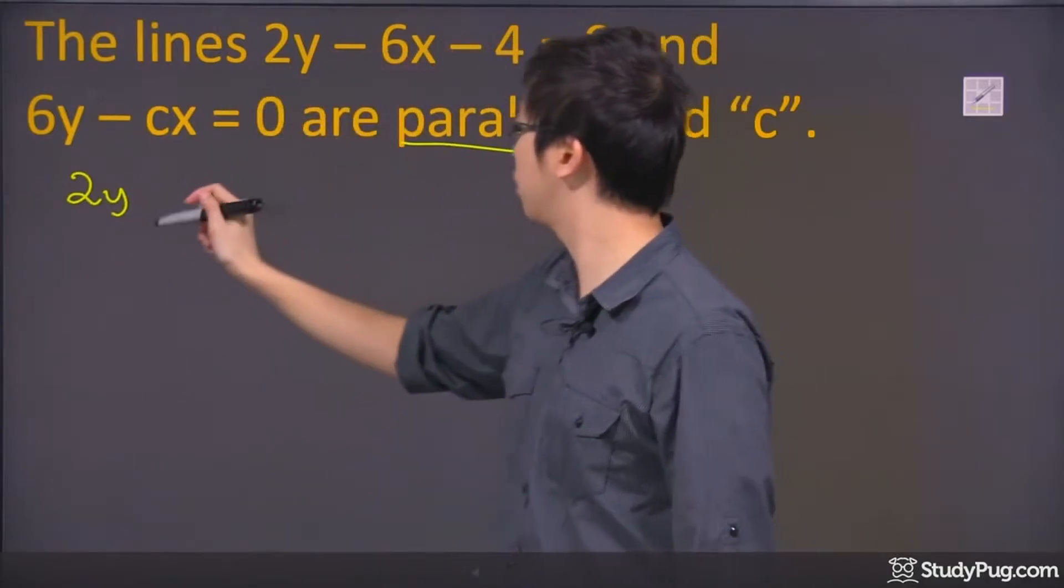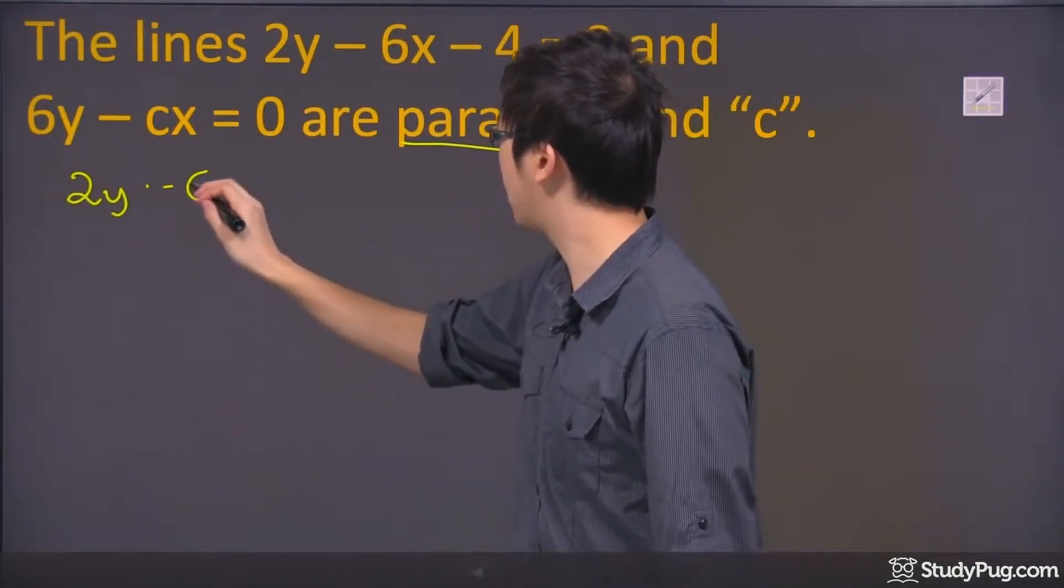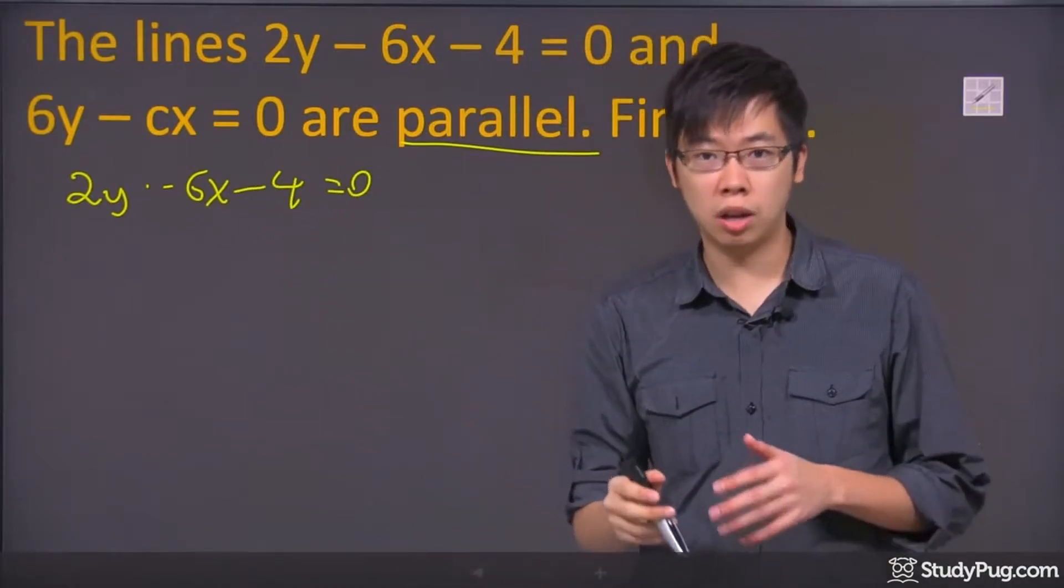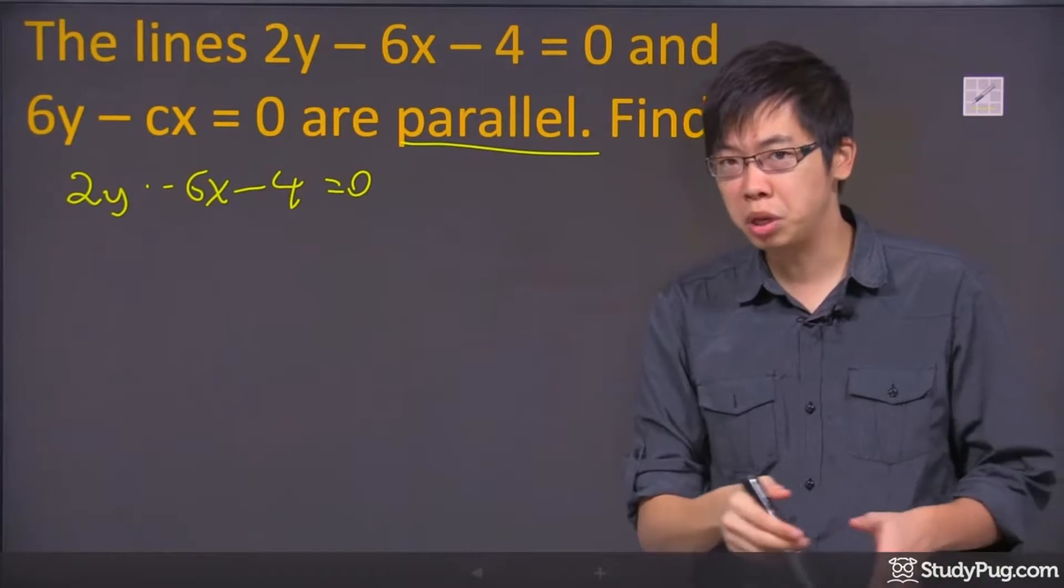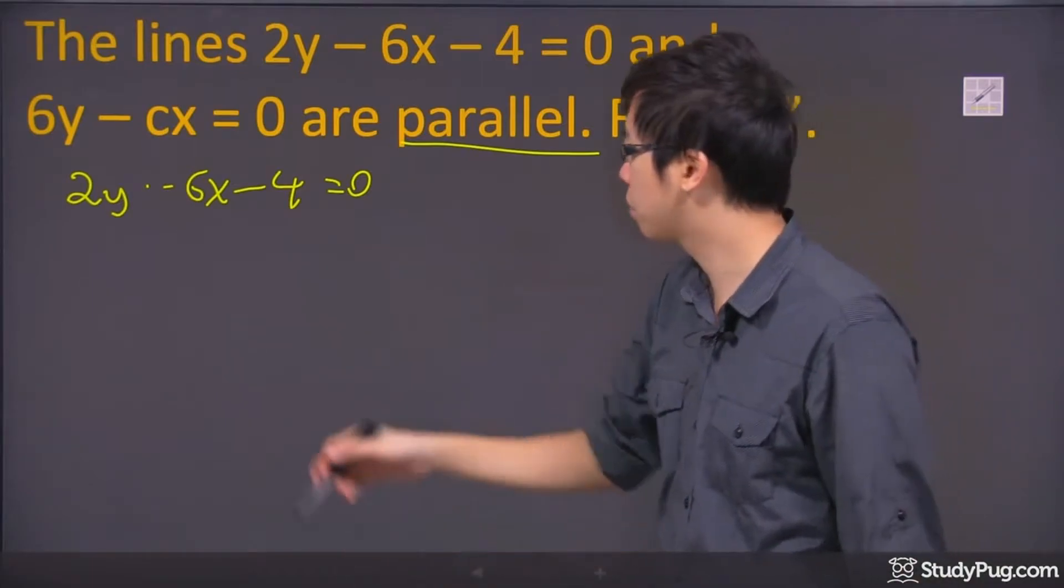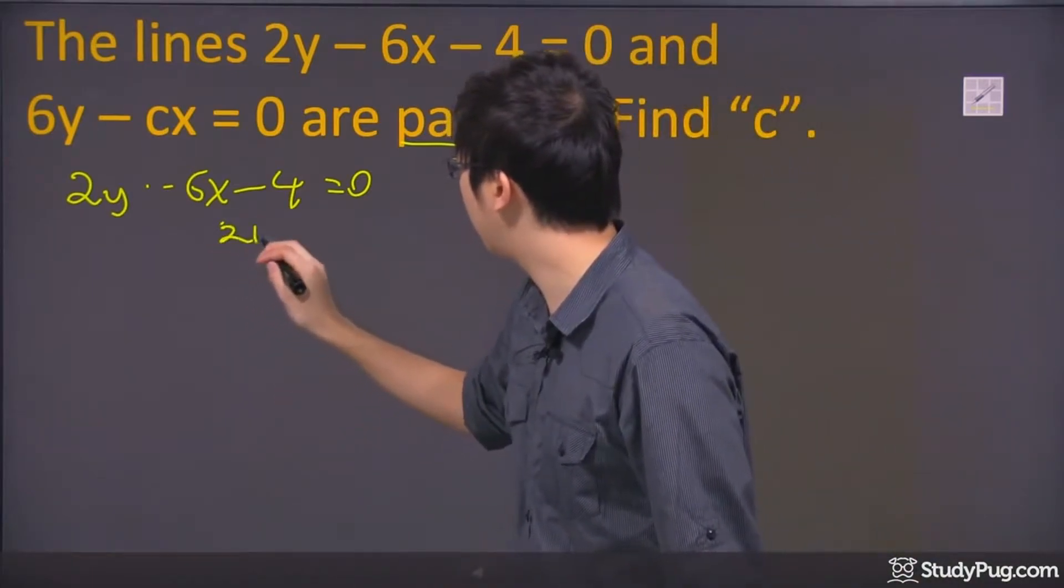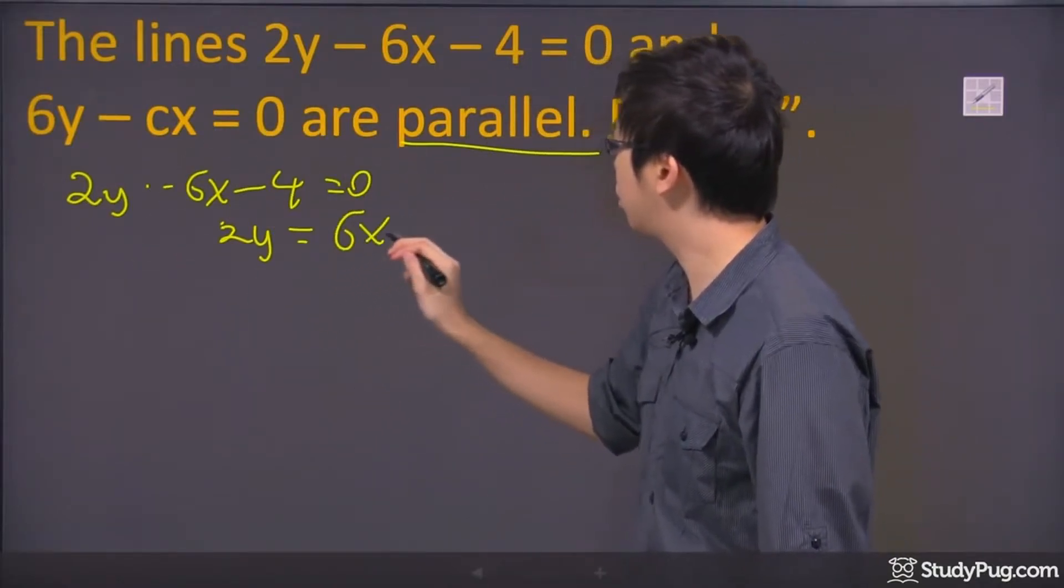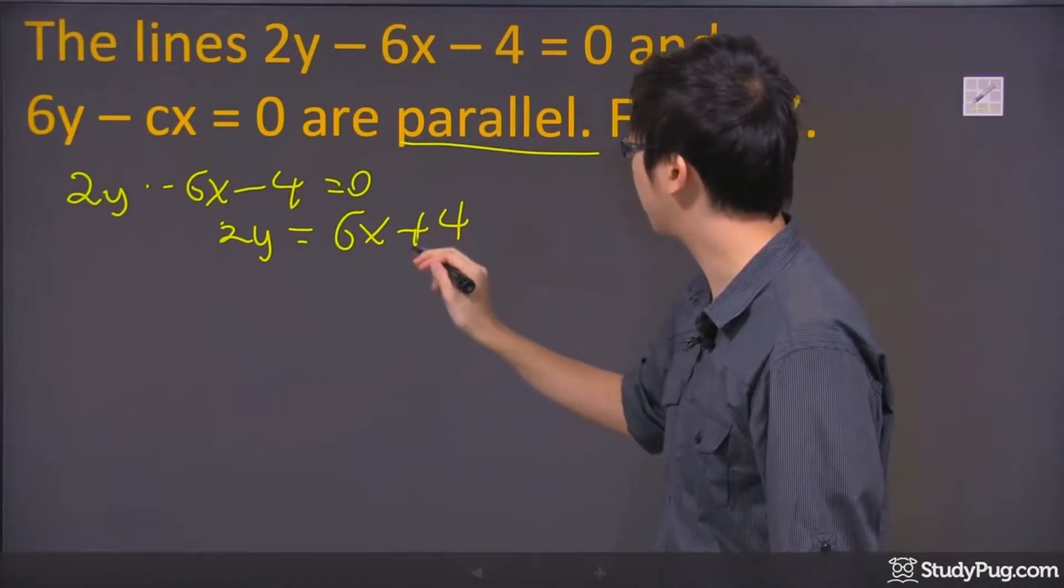So I'm just copying down the first equation on top. 2y minus the 6x and minus the 4 equals 0. Now, to get y equals mx plus b, you just have to solve for y, basically. So if I just put 2y over here by itself, move the 6x and negative 4 to the other side, it's just 6x plus 4.